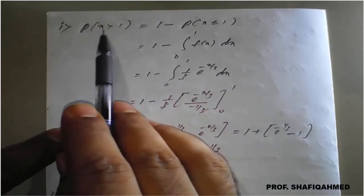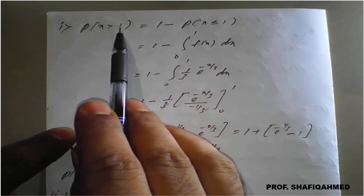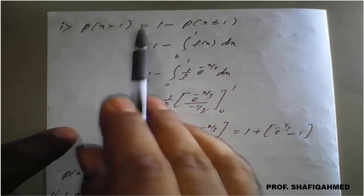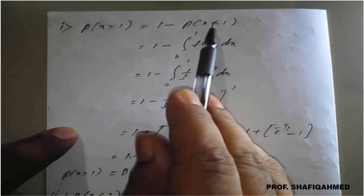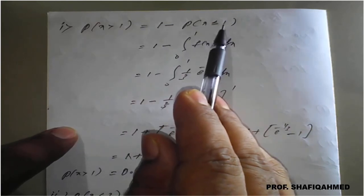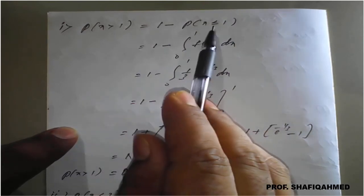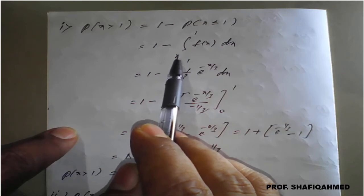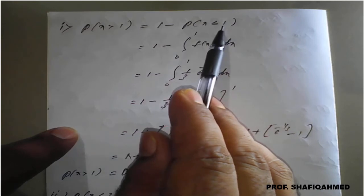The first one, P(x > 1), means it will start with 1 and end with infinity. So we will rearrange this one as 1 minus P(x ≤ 1), which is nothing but 1 minus... less than or equal to 1 means it will start with 0 and end with 1.